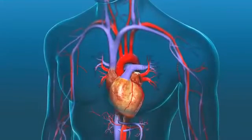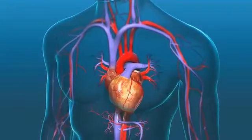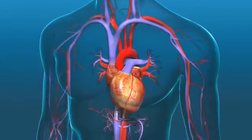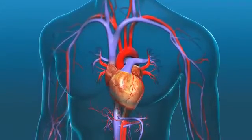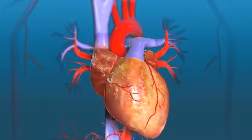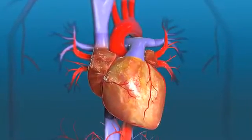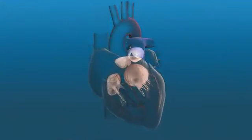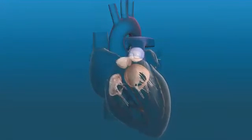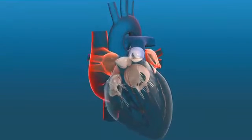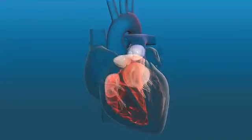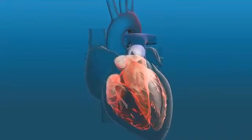Your surgeon will perform an aortic valve replacement if your aortic valve is not functioning properly. The heart is a muscular organ that pumps blood through the body. It consists of four chambers. The upper chambers are the right and left atria. The lower chambers are the right and left ventricles.